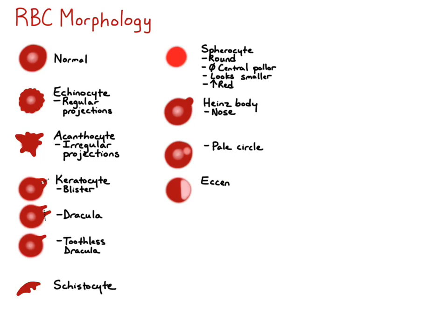An eccentricyte is also an oxidatively injured red blood cell, but this time the membrane is fused together. Part of the membrane is fused and has pushed the rest of the hemoglobin to the other side of the cell, so one side looks diffusely red whereas the other side looks pale. If you were to cut this red blood cell and turn it 90 degrees, you could see the fused area on one side and all of the hemoglobin pushed to the other.